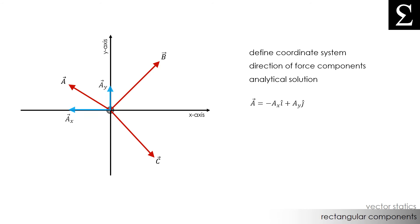First, we could break down force A as negative AXI plus AYJ. Next, we could break force B down as BXI plus BYJ. And finally, we could break down force C as CXI minus CYJ.